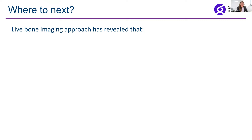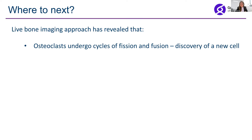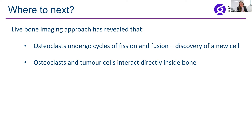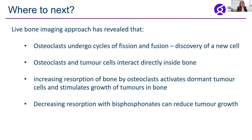To summarize so far: using our new bone imaging technique, we've discovered that osteoclasts undergo cycles of fission and fusion, leading to the discovery of a completely new cell in living bone tissue. We've shown that osteoclasts and tumor cells interact directly inside bone, and that increasing osteoclast numbers wakes up dormant tumor cells and stimulates tumor growth. We've also shown that if we block resorption by osteoclasts using bisphosphonates — used to manage bone loss in osteoporosis and in patients with metastatic bone cancer — we can reduce tumor growth.